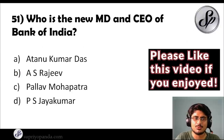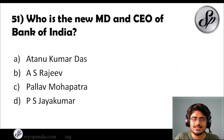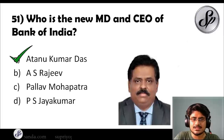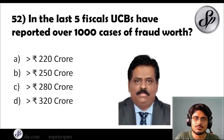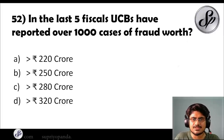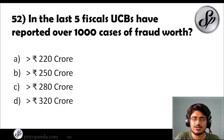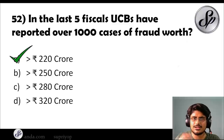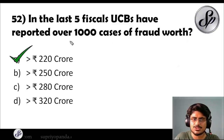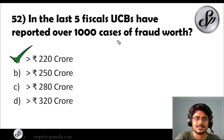Question fifty-one: who is the new MD and CEO of Bank of India? The answer is Atanu Kumar Das. Question fifty-two: in the last five fiscals, urban cooperative banks have reported over 1,000 cases of fraud worth how much? The answer is over 220 crores. Remember both figures — over 1,000 cases and greater than 220 crores worth of fraud.